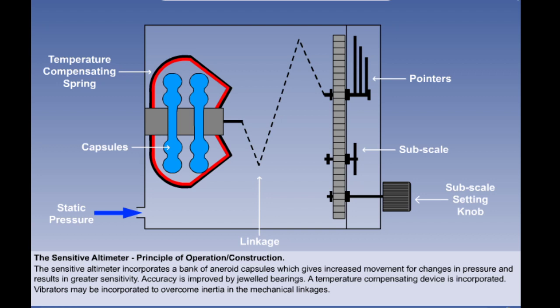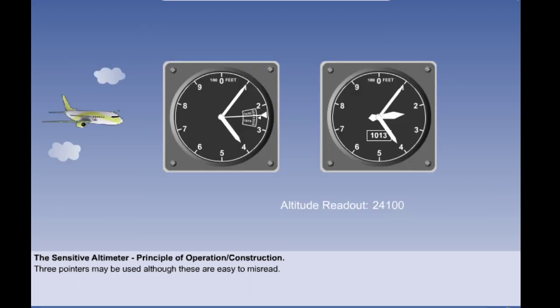Some sensitive altimeters incorporate vibrators which help overcome friction and the inertia of the mechanical linkages. This assists in giving a faster response rate to altitude change. Looking at the sensitive altimeters illustrated on screen, we can see that the more sophisticated mechanism enables the use of three pointers on the instrument dial — one pointer for tens of thousands of feet, one for thousands and one for hundreds of feet. While this may initially be seen as advantageous, there is a major shortcoming in that the three pointer system is easy to misread.